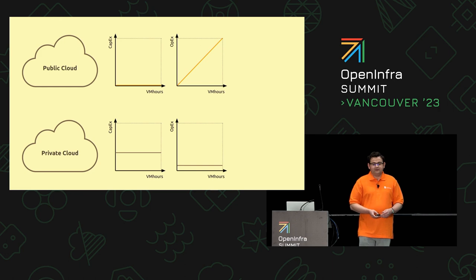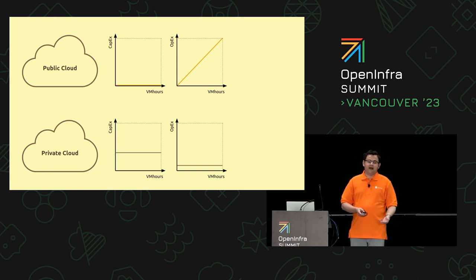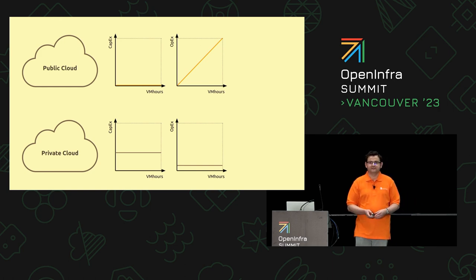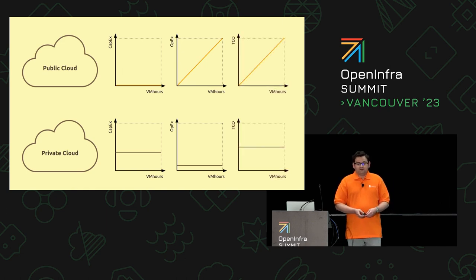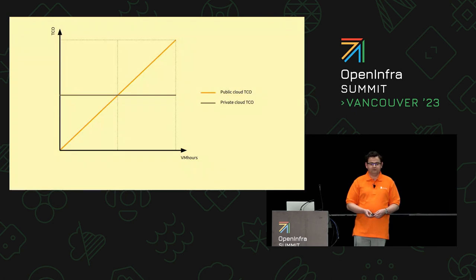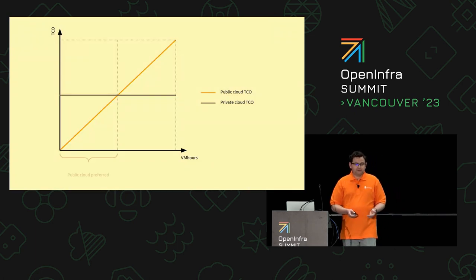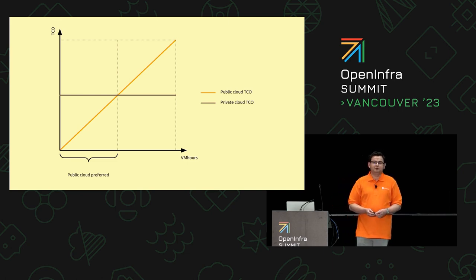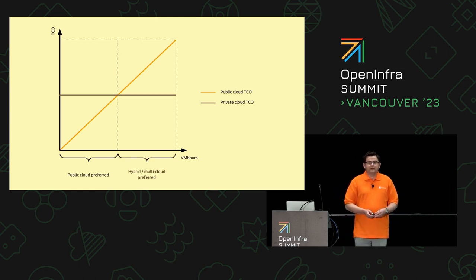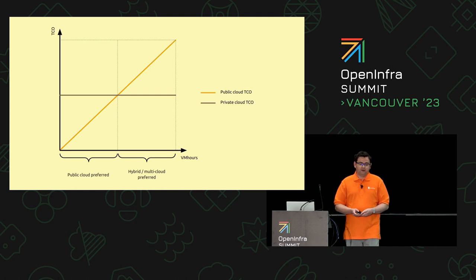To briefly explain how costs shape across public and private clouds: with public clouds, CAPEX is almost zero — just attach a credit card and start consuming resources. Private clouds come with relatively high CAPEX — you need to purchase hardware and deploy the cloud on top. But over time, the OPEX cost associated with public cloud is relatively high, while on the private cloud side it remains relatively flat. Assuming fixed capacity, regardless of how many workloads run on your private cloud, it's still the same electricity and hardware maintenance cost. When you add CAPEX and OPEX, you get TCO. There's a period of time where public cloud is preferred from a TCO perspective — especially at small scale or short term. But at some point, those two curves cross, and it becomes more optimal to use a hybrid multi-cloud architecture.